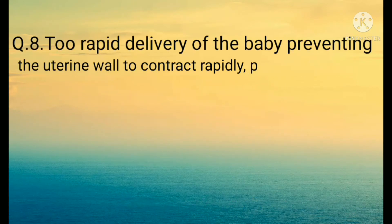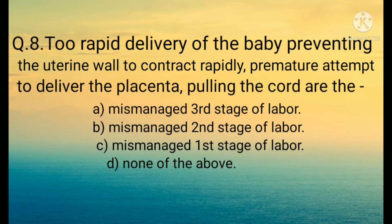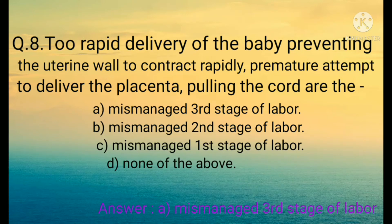Question number eight: Rapid delivery of the baby preventing the uterine wall from contracting, premature attempt to deliver the placenta, and pulling the cord are examples of: A) Mismanaged third stage of labor, B) Mismanaged second stage of labor, C) Mismanaged first stage of labor, D) None of the above. The correct option is A) Mismanaged third stage of labor.